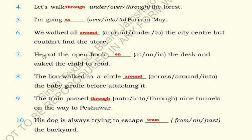Number seven: He put the open book on the desk - اس نے کھلی کتاب desk پر رکھی - and asked the child to read - اور بچے سے پڑھنے کے لئے کہا۔ یہاں 'on' آئے گا خالی جگہ میں۔ Number eight: The lion walked in a circle around the baby giraffe before attacking it - baby giraffe پر attack کرنے سے پہلے شیر دائرے کے طور پر baby giraffe کے چاروں طرف چلا۔